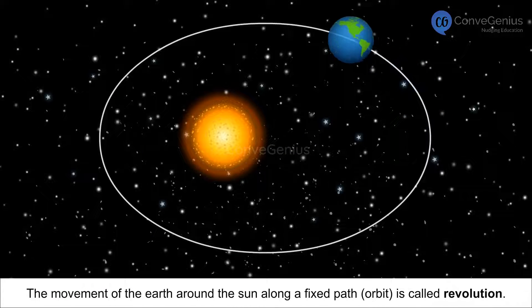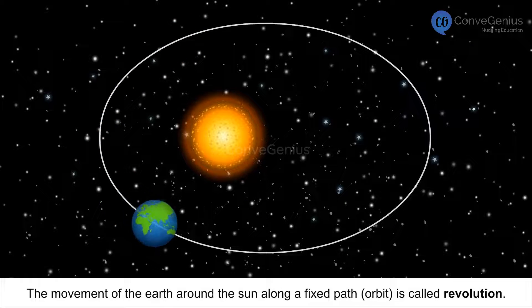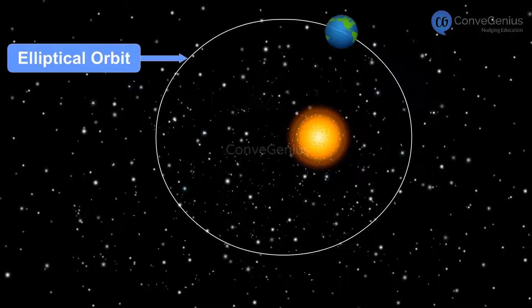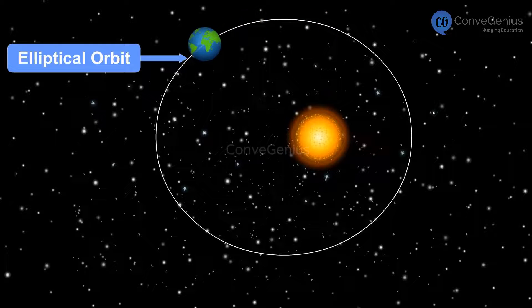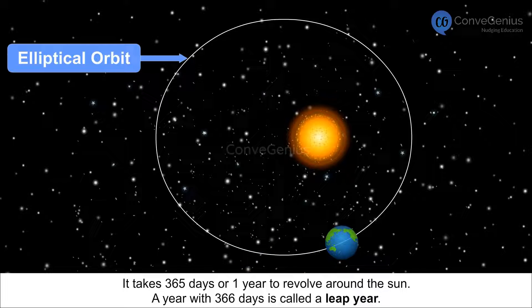The movement of the Earth around the Sun along a fixed path or orbit is called revolution. The orbit of the Earth is elliptical in shape. It takes 365 days or one year to revolve around the Sun.